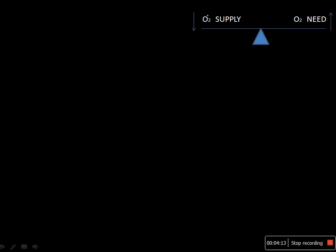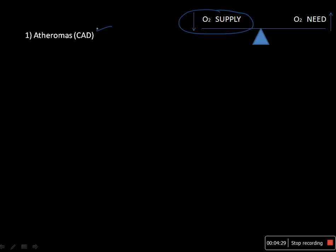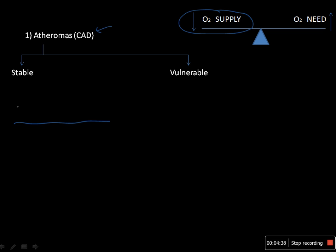Now we will focus individually on the factors which decrease oxygen supply and the factors which increase oxygen need. First, we will focus on factors which decrease oxygen supply. The classical example is atheromas, classified under coronary artery diseases. Atheromas can be of two types: stable atheromas and vulnerable atheromas.